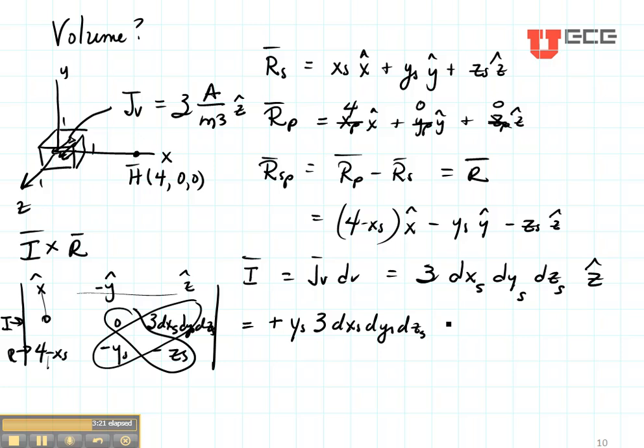The Y part is going to be, again, cross multiplying. It's going to be this minus that. 3 DXS, DYS, DZS, times 4 minus XS. Those minuses cancel out.